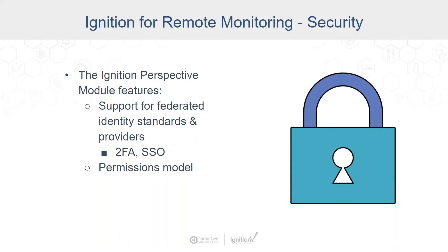The Ignition Perspective module has support for federated identity providers and standards. SAML 2.0 and OIDC are both supported in Ignition directly. These protocols let you use systems like Ping, Okta, Active Directory Federated Services, Duo, and a number of other identity providers. Federated identity providers often support features like single sign-on and two-factor authentication. In fact, at Inductive Automation, everything we do with Ignition or within our organization is protected by two-factor authentication wherever we can. So if you have other web apps using single sign-on, you can configure Ignition to use that same set, both for the apps and for the web browser visualizations, and it will tie into the rest of the infrastructure.